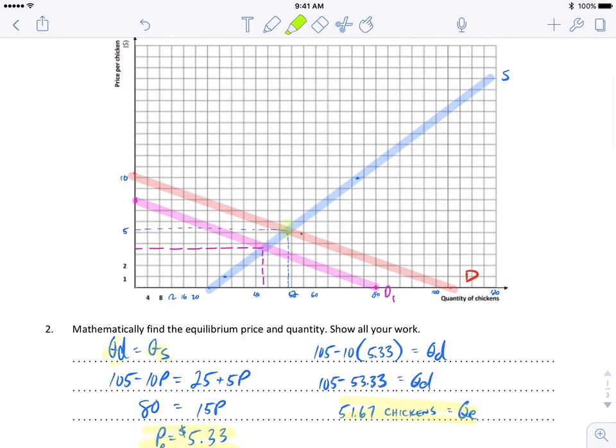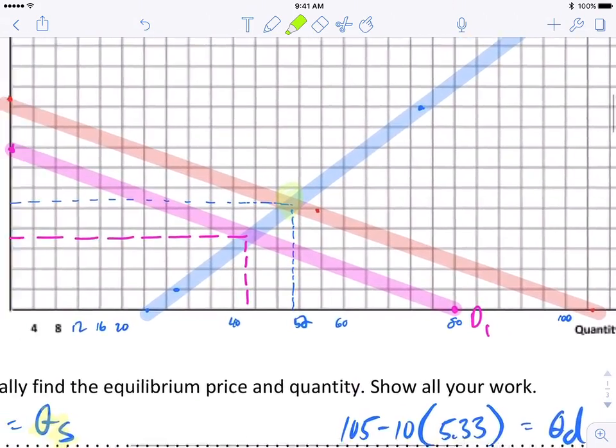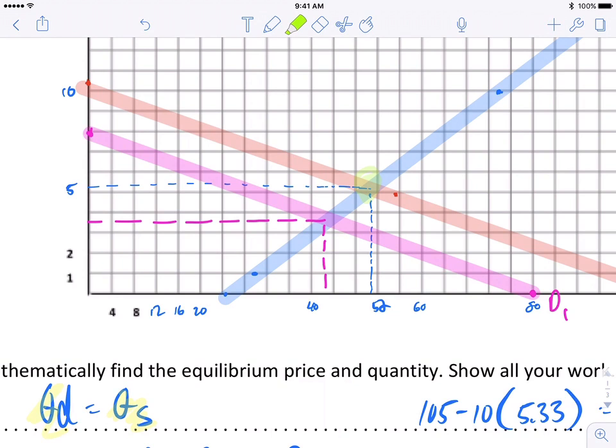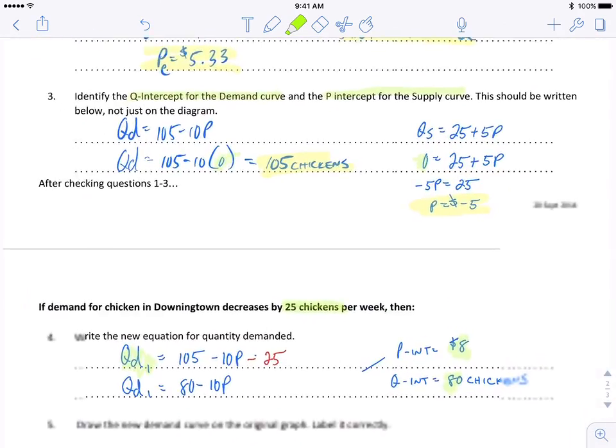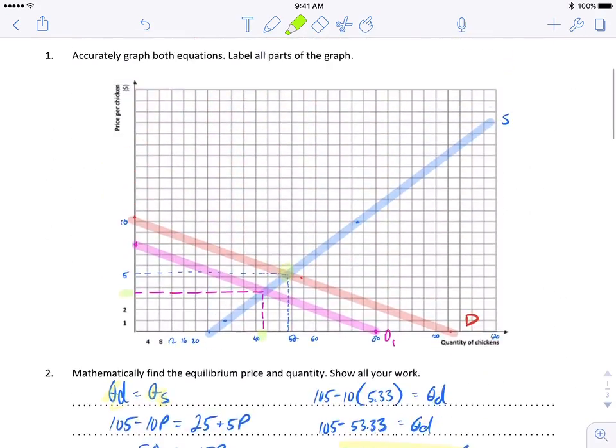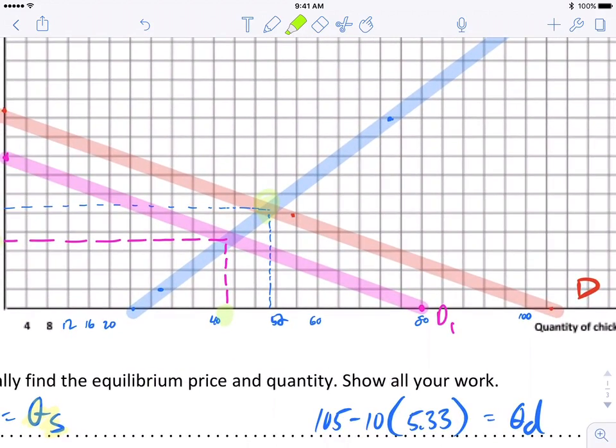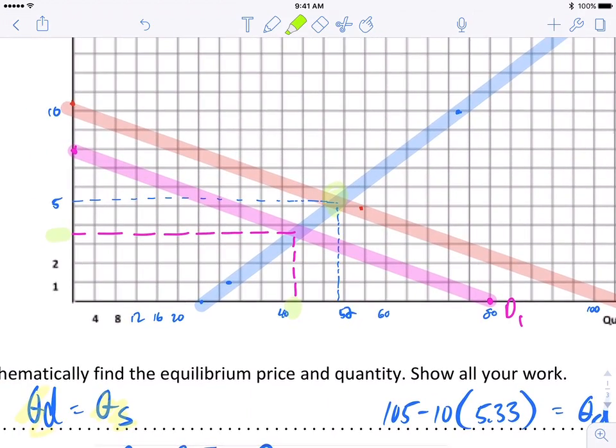And that should be very close if you've done your graphing right to three dollars and sixty-seven cents and forty-three and a third chickens, so your intersection should be very close to those values.